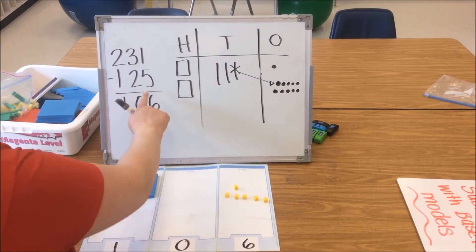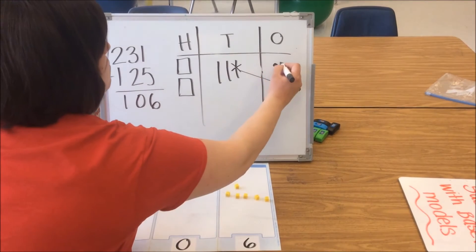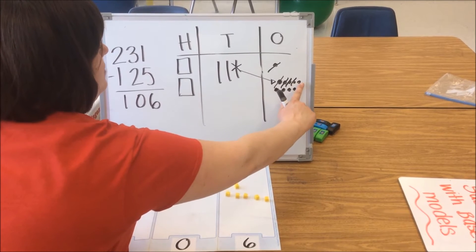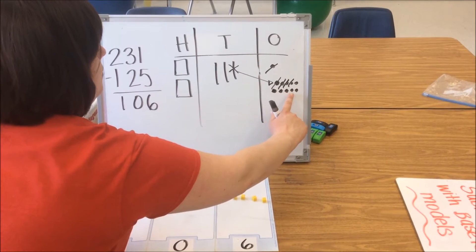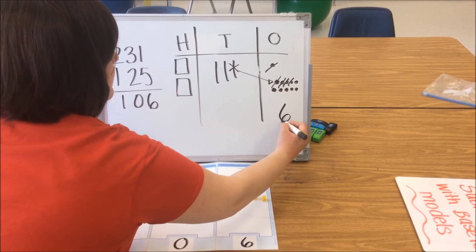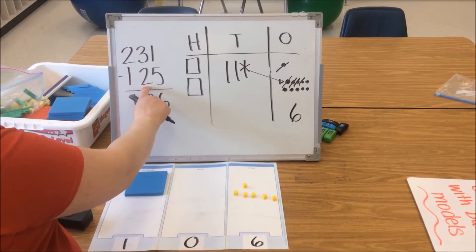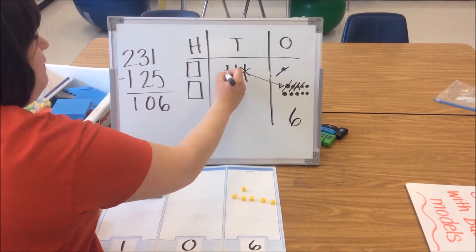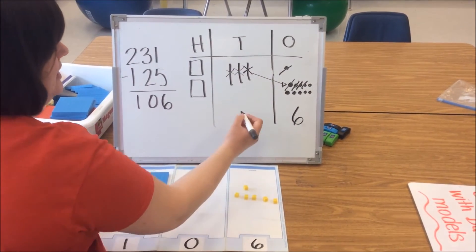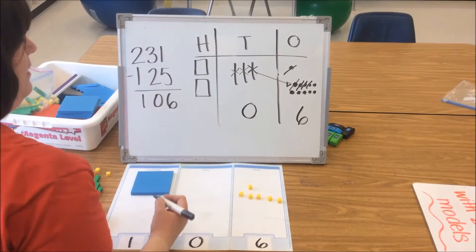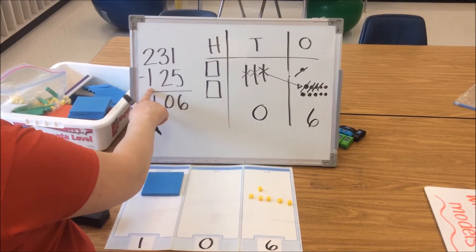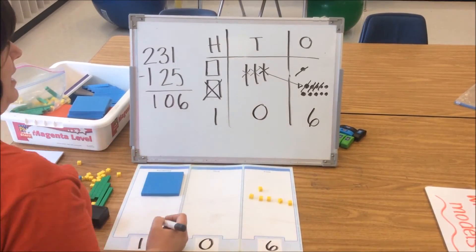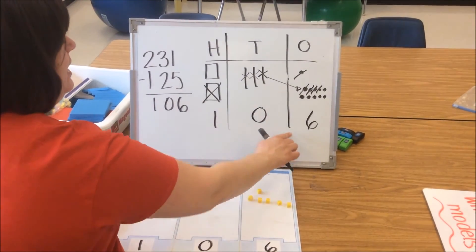Now we're ready to subtract our 5 ones: 1, 2, 3, 4, 5. And we count what's left: 1, 2, 3, 4, 5, 6. Then we go to our tens column — we see we need to take away 2 tens, so we have 2 tens remaining and we cross those off. We have no tens left, so we put a 0 there. We go back to our problem, take away 100, cross off that 100, and we have one remaining. So our answer is 106.